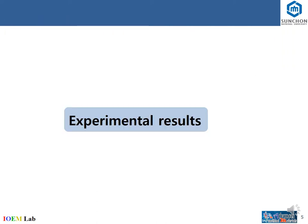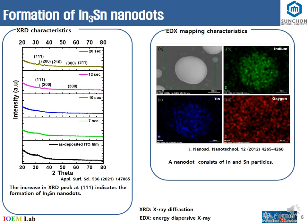In the experimental results, first we check the formation of nanodots by using XRD characteristics. After 10 seconds we see there are some peaks in the XRD characteristics which indicate the formation of nanodots, where each nanodot consists of indium and tin particles, which are confirmed by using EDX mapping characteristics. This is what we already reported in our previous work.